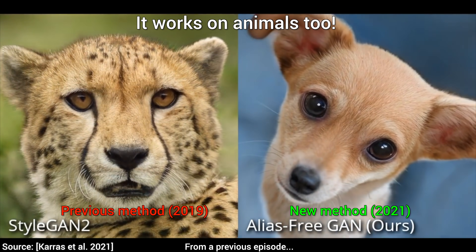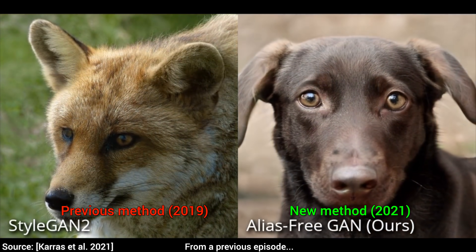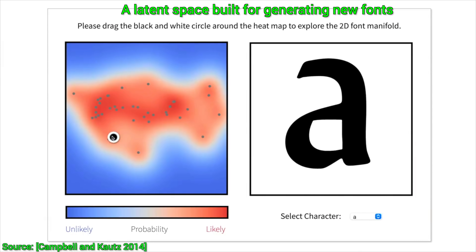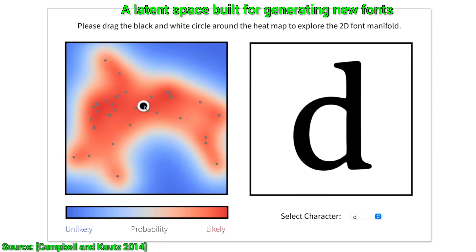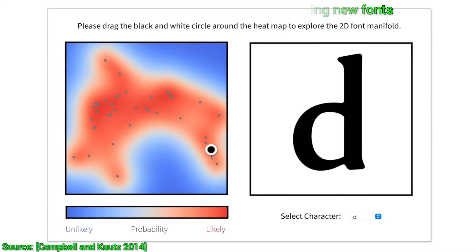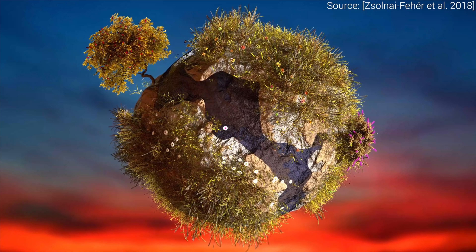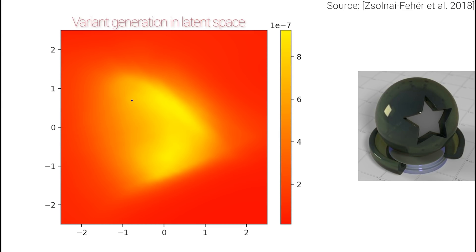How does it do all this black magic? Well, it takes walks in a latent space. A latent space is a made-up place where we are trying to organize data in a way that similar things are close to each other. In our earlier work, we were looking to generate hundreds of variants of a material model to populate a scene. In this latent space, we can concoct all of these really cool digital material models. A link to this work is available in the video description.